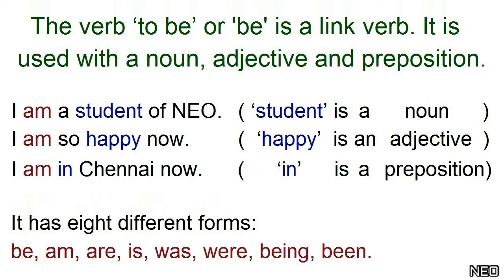Examples: I am a student — student is a noun. I am so happy now — happy is an adjective. I am in Chennai now — in is a preposition.